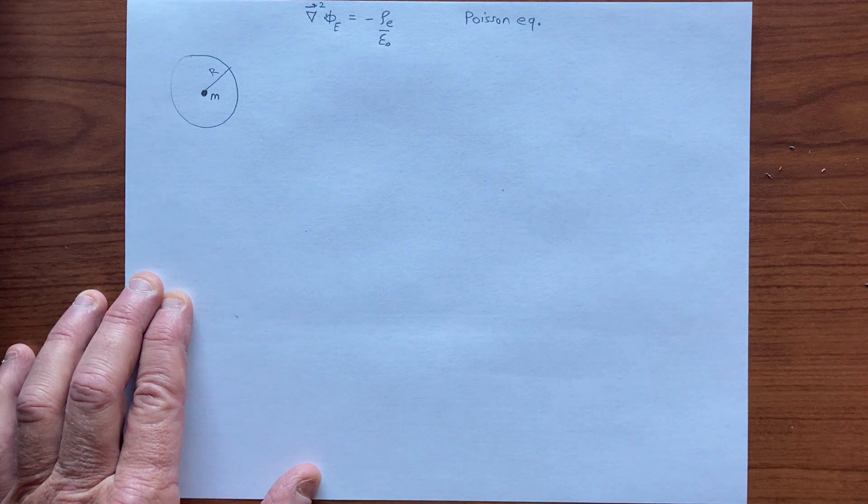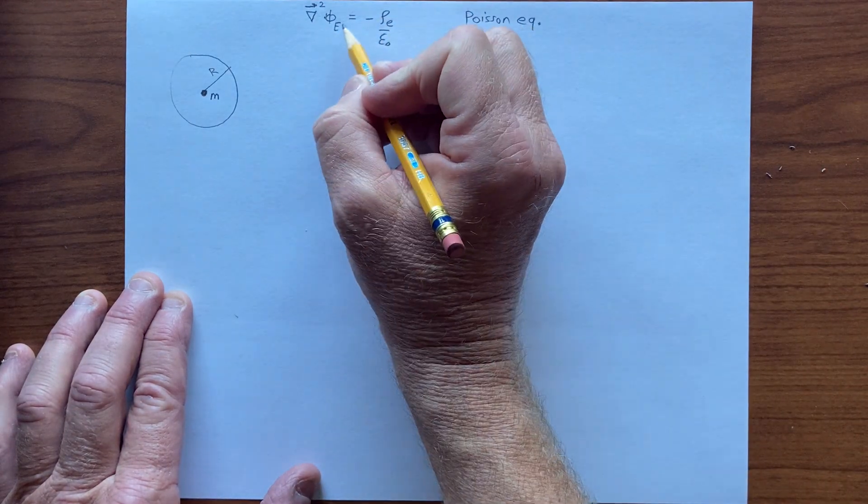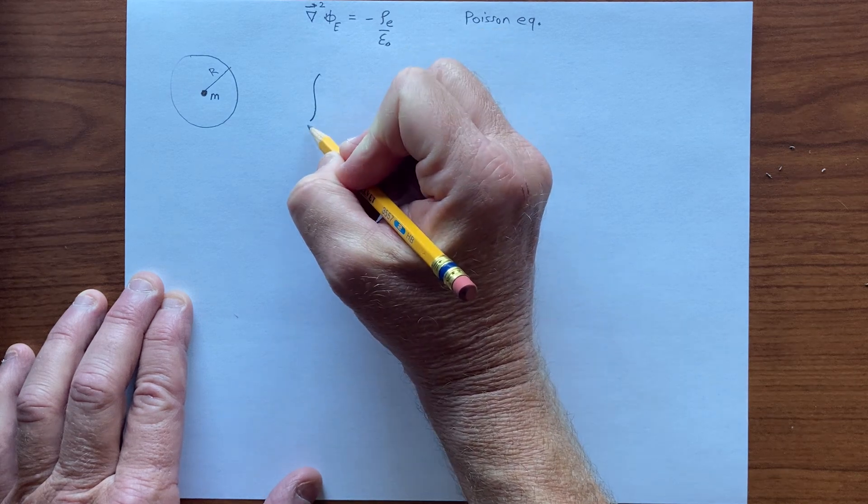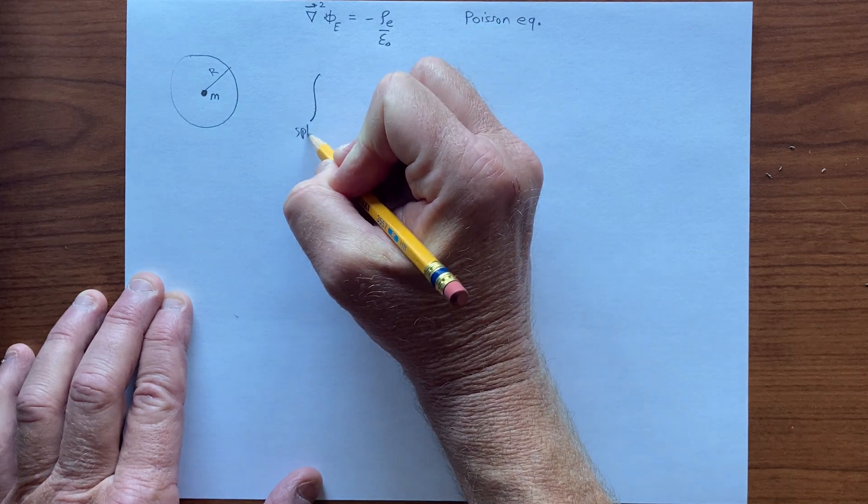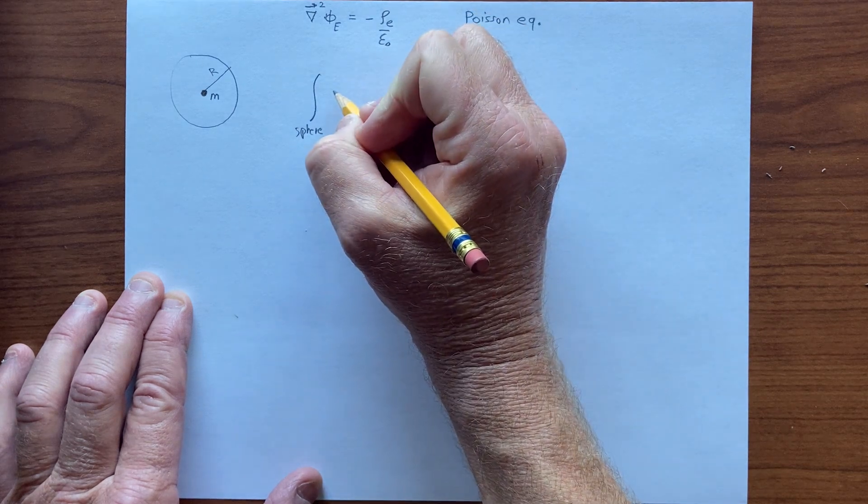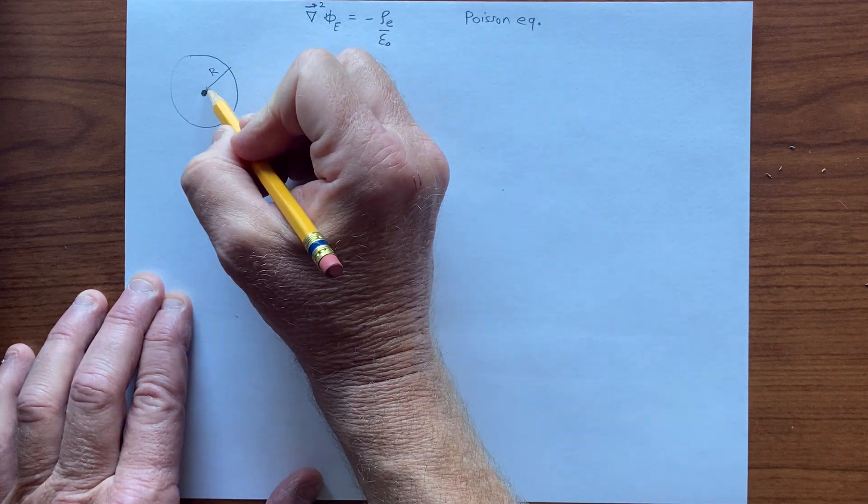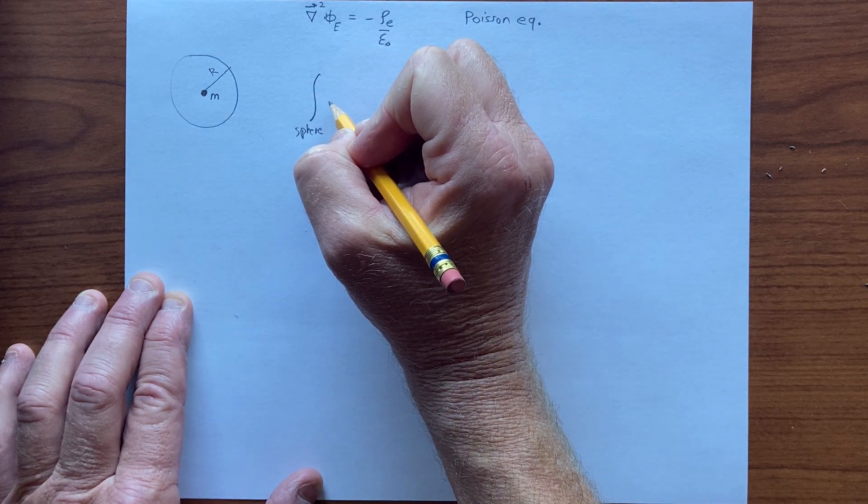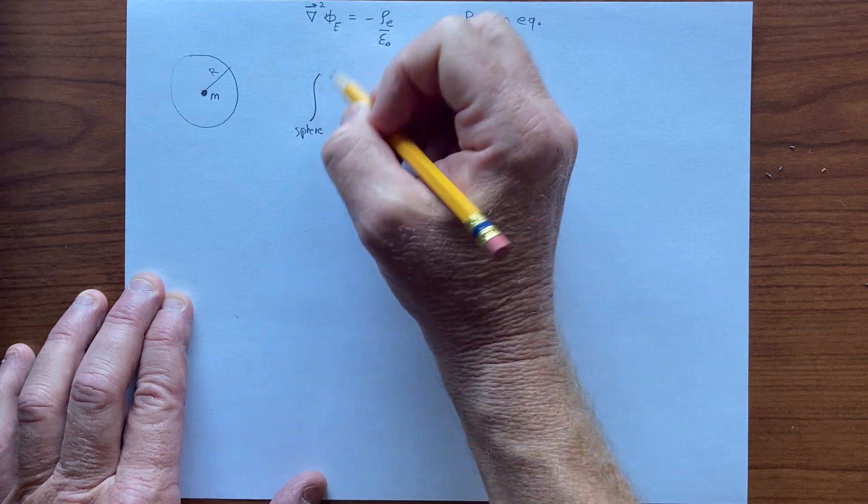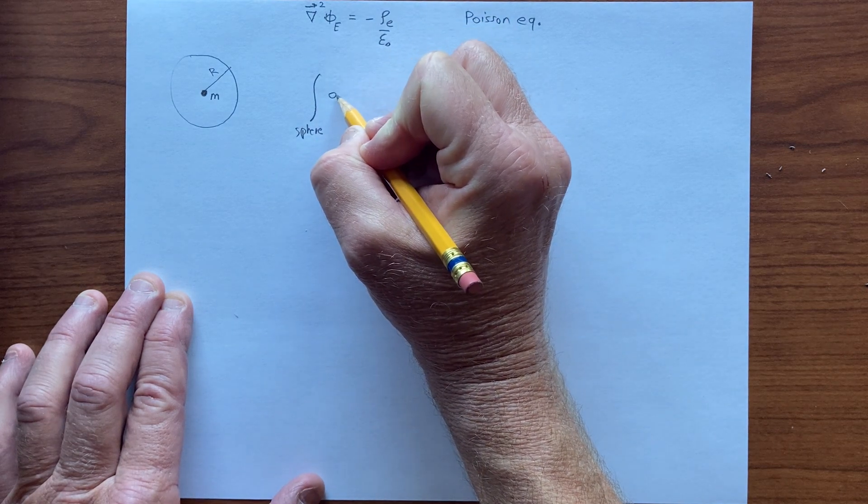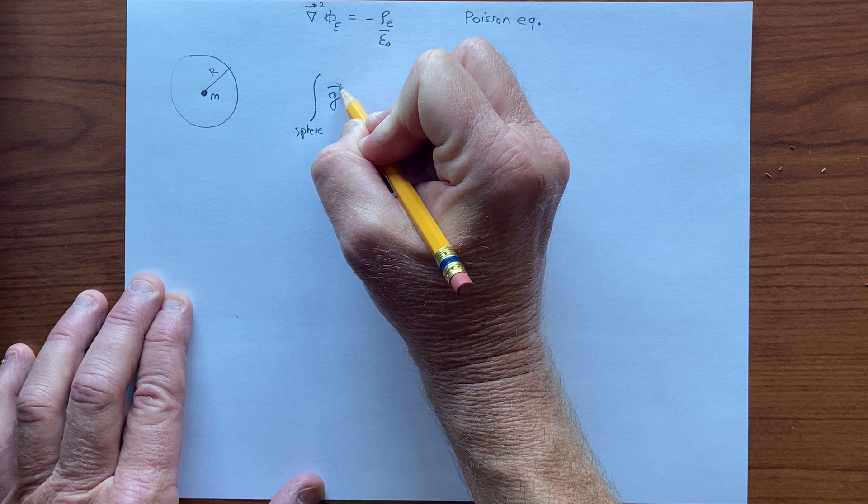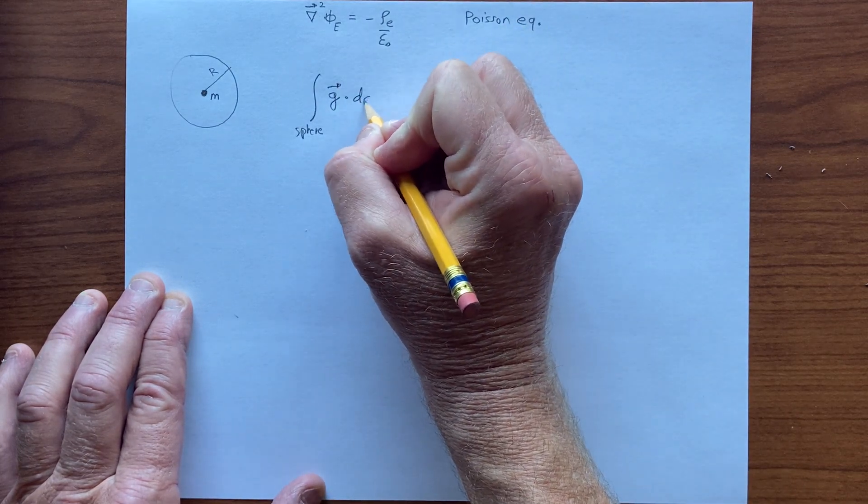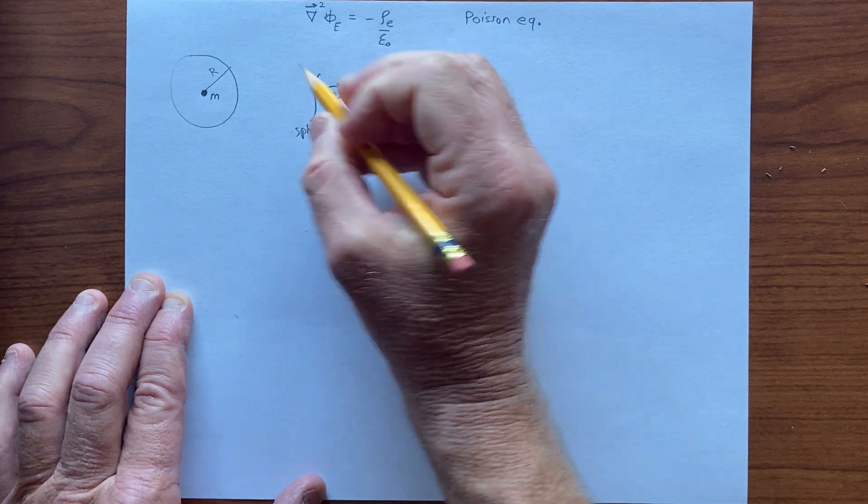and say we have radius r, and we want to consider the integral over the sphere of the gravitational acceleration, which is sort of the analog of the electric field for electromagnetism. So in this case, we're dealing with the field of acceleration g, integrated over the surface, over the surface of the sphere.